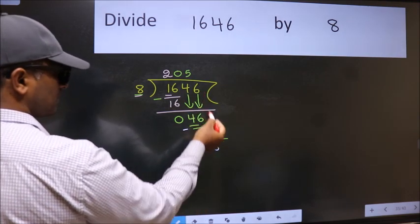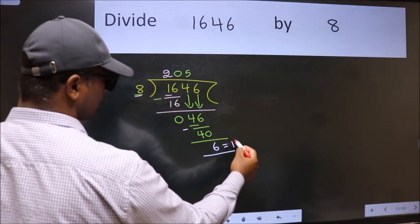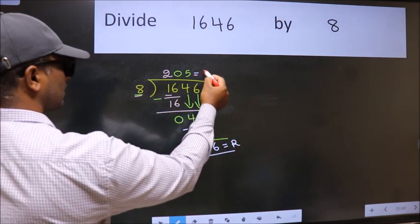No more numbers to bring down, so we stop here. This is our remainder and this is our quotient.